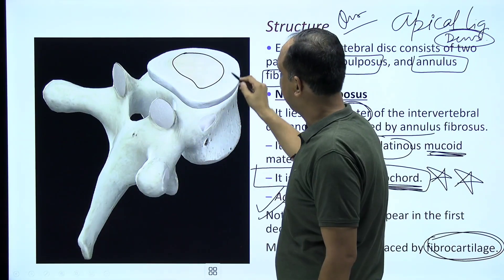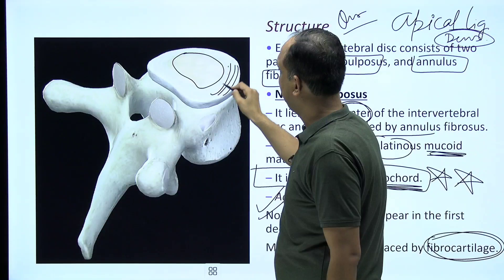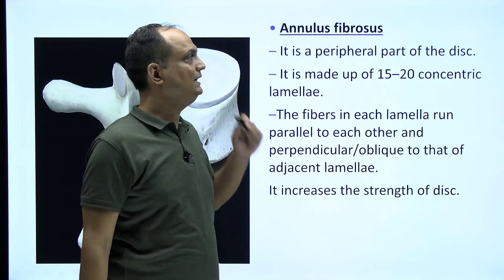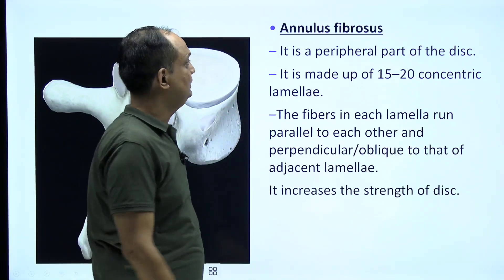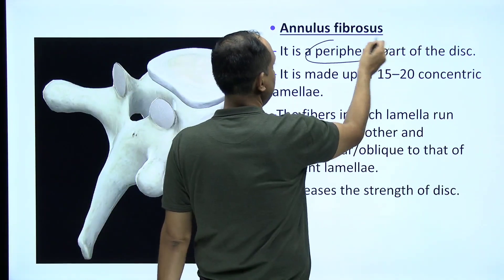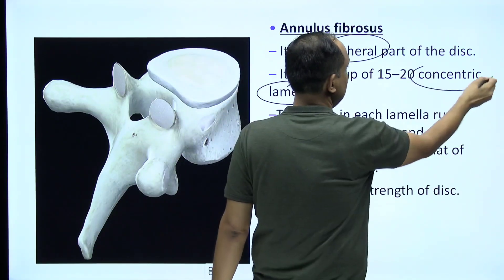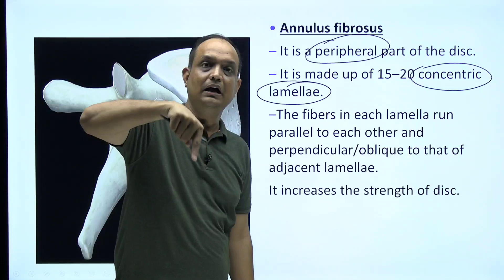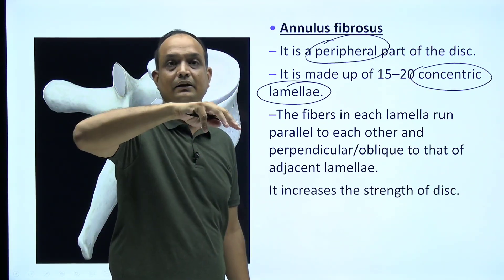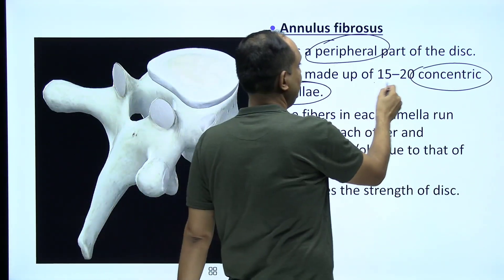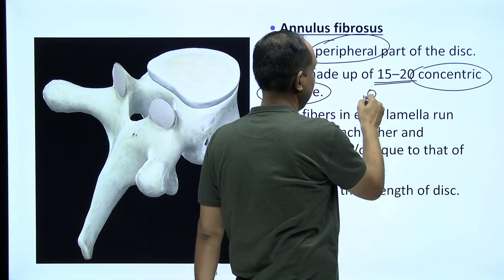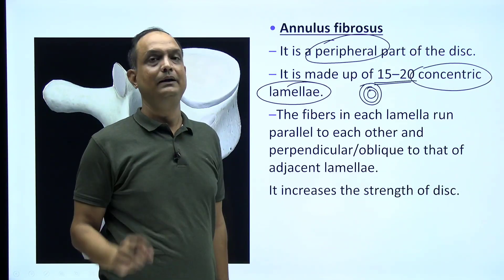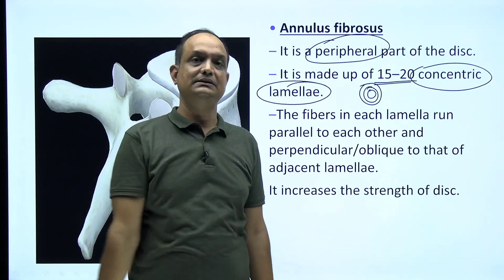In diagrams, the light-colored central area is the nucleus pulposus, and the multiple rings in the periphery form the annulus fibrosus. The annulus fibrosus has concentric lamellae — multiple rings arranged one outside the other — with 15 to 20 such rings present.